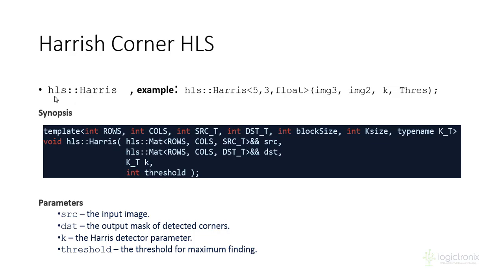Here we have the HLS — High-Level Synthesis — Harris Corner example using the function hls::Harris. It can be utilized as shown: hls::Harris takes the parameters ksize, k, and the data type. The full signature requires source input image, output image, k, and threshold. The source is the input image, the output image, the Harris corner parameter k, and the threshold.